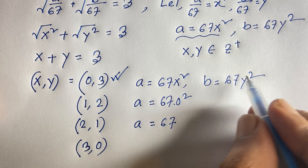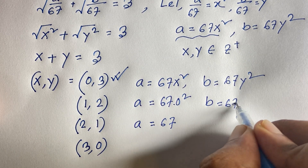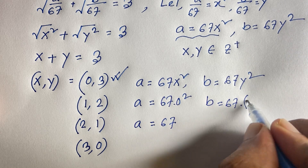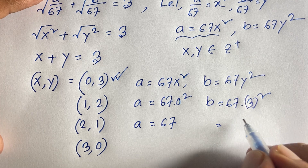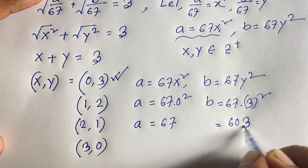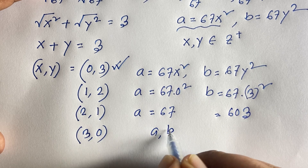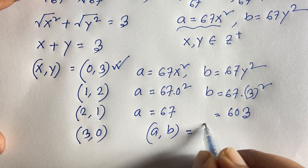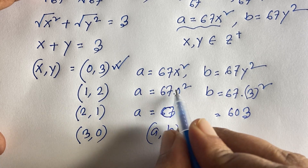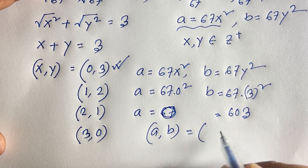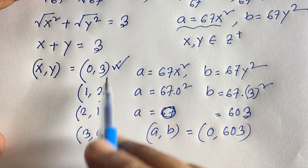So in the first case, a = 0 and b = 603. We can verify: √0 + √603 = √603. ✓ This is the first answer: (a, b) = (0, 603).